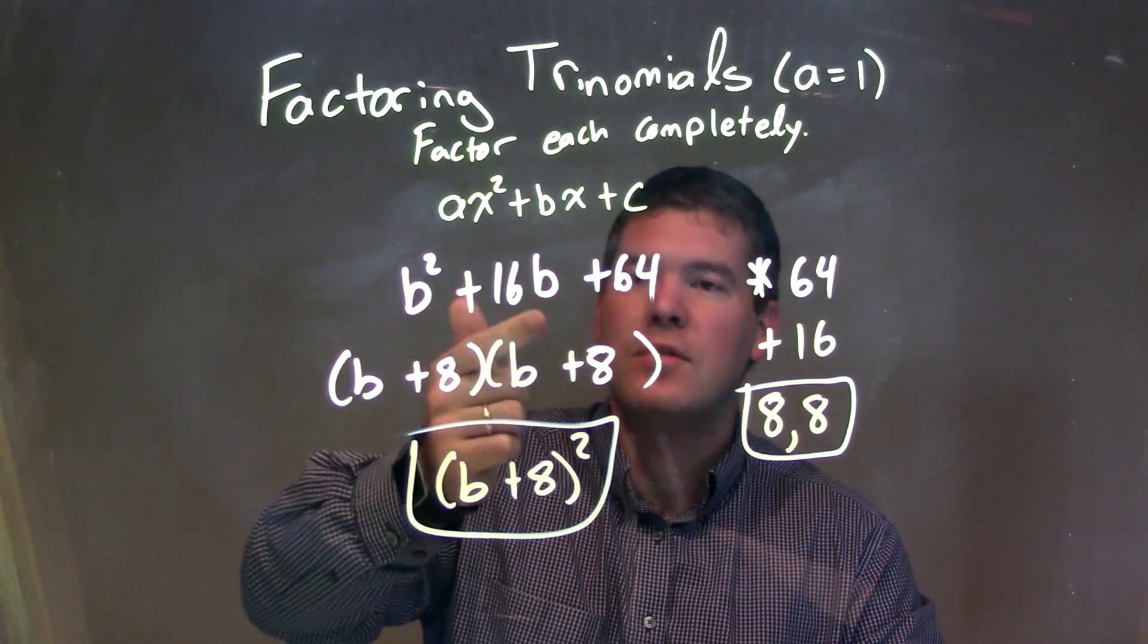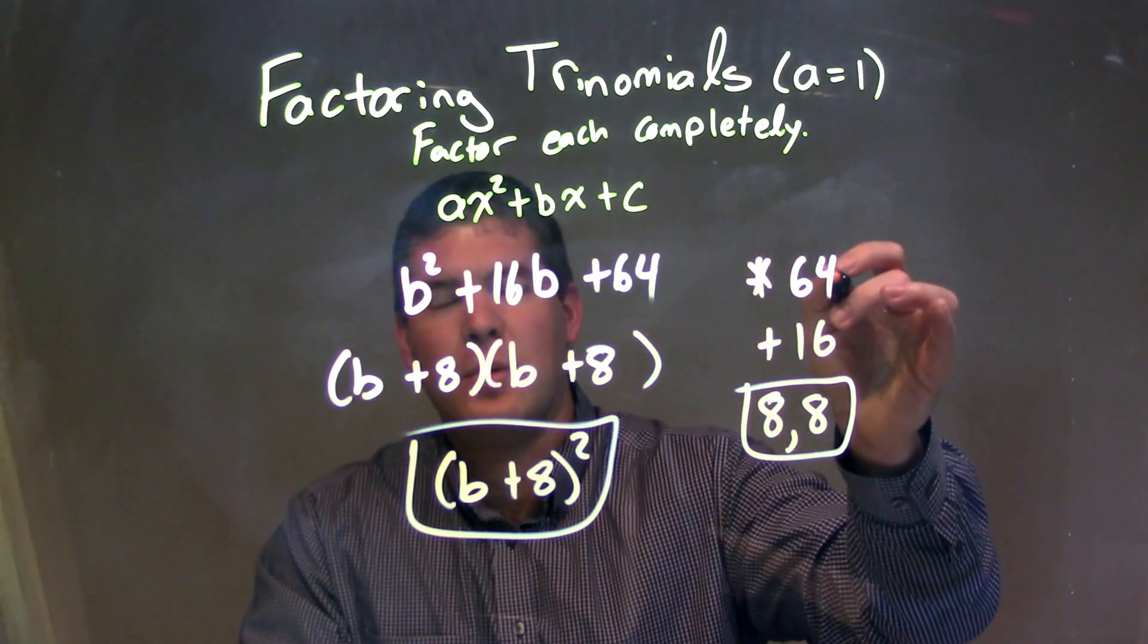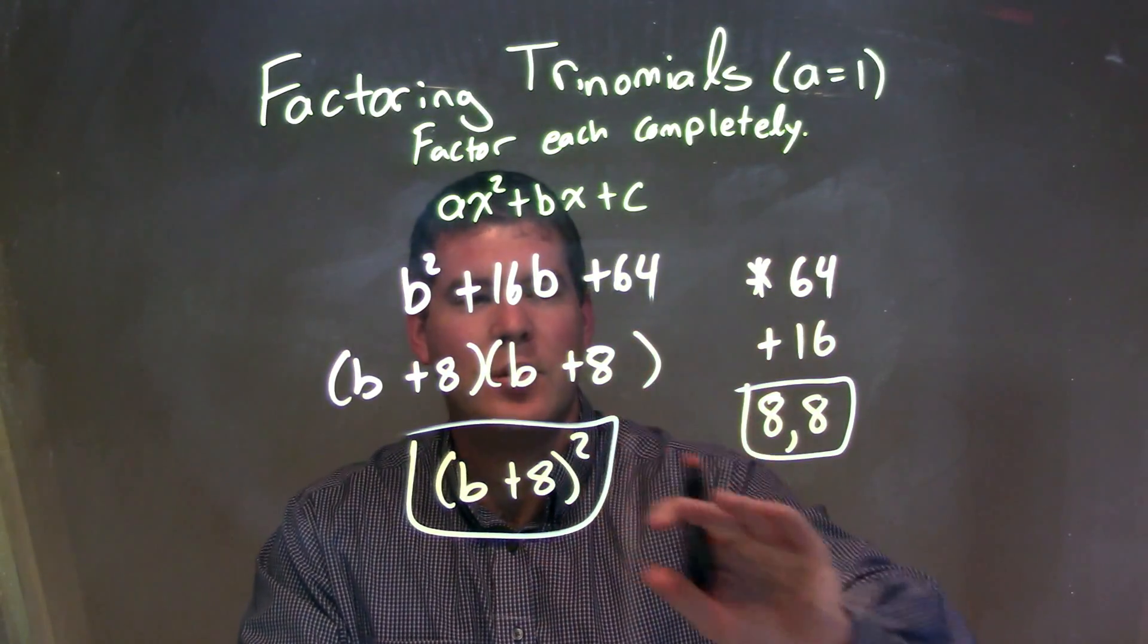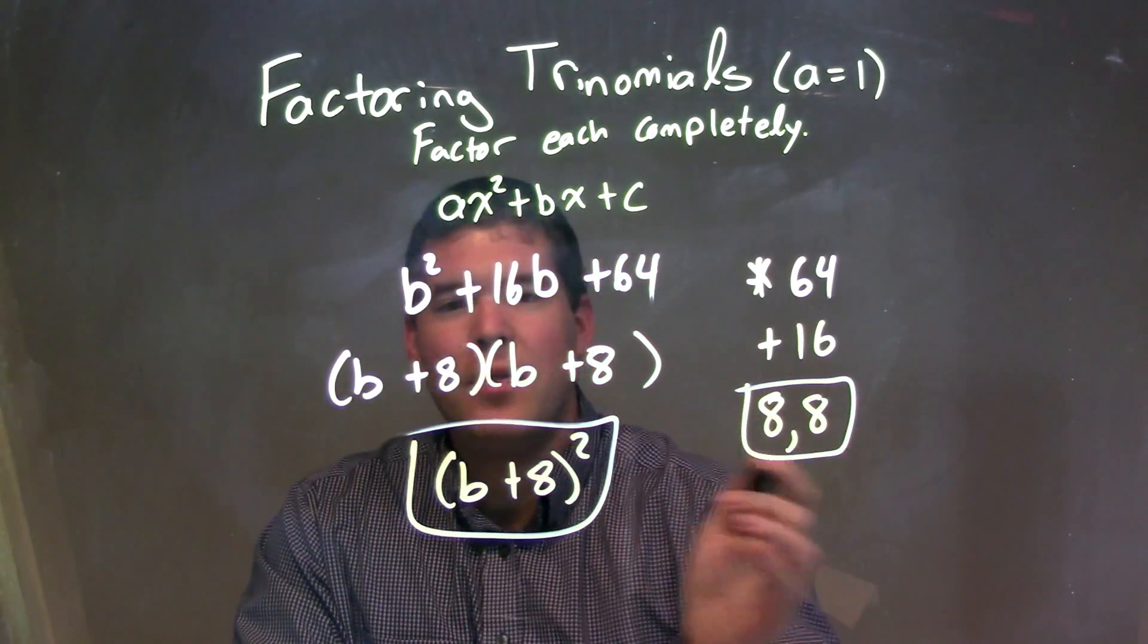So let's recap. We're doing b squared plus 16b plus 64. We have to ask ourselves the question: what two numbers multiply to be 64 but add to be 16? The two numbers we're thinking about are 8 and 8.